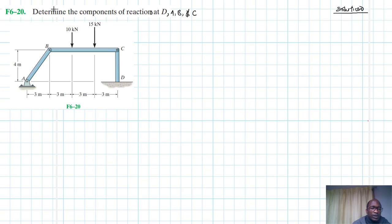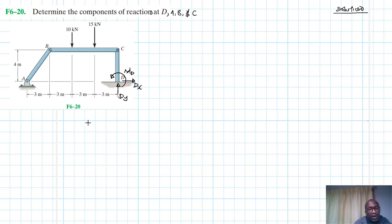Let's draw the free body diagram. This frame is fixed at D, so you expect to have 3 reaction forces there: DY, DX, and then a moment — I'm calling it MD.